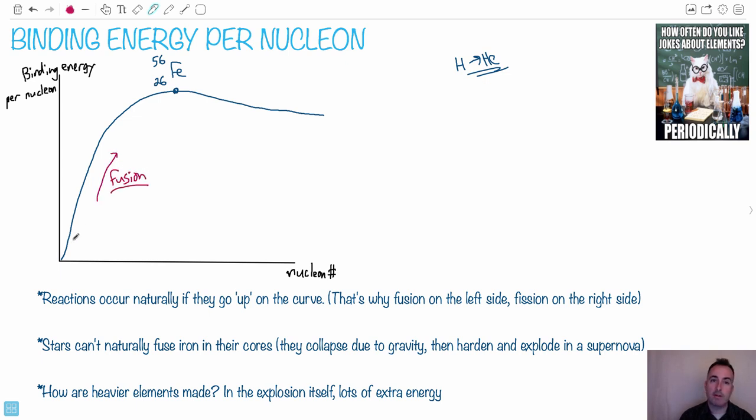So fusion is this act of going from a lighter element to a heavier element. So this explains why fusion is on the left, because it's more energetically favorable. Because only by this does it go up the curve. And by going up the curve, then that's what it has to do to be natural. That's why fusion happens to the right, until it reaches binding energy maximum here, which is iron.